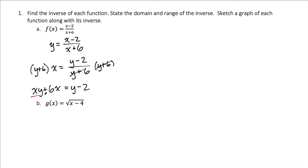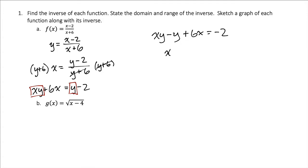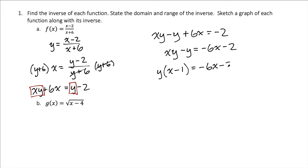Now, everything that has a y we want together on one side of the equation. Let's move them to the left side. So subtracting y from both sides gives us xy minus y, and then plus 6x equals negative 2. Then subtract the 6x over because it does not have a y with it. So we've got xy minus y equals negative 6x minus 2. The reason we want all the y's together is so we can factor it out, giving us y times (x minus 1) equals negative 6x minus 2.